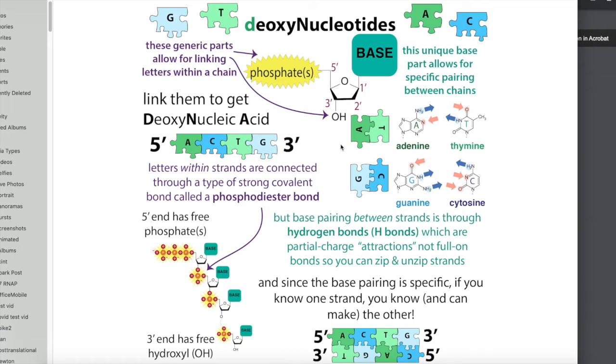So there are four DNA letters, A, C, T, and G, and DNA is just like a string of these letters, these deoxynucleotides. And you have this specific base pairing where A pairs just with T and G pairs just with C. So if you have one strand, you know the sequence of the other strand, and you can make a copy of the one strand based on the other strand.